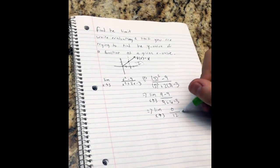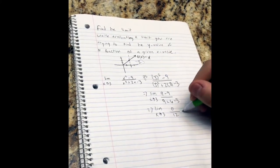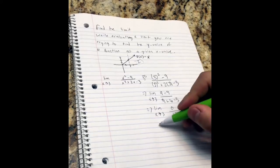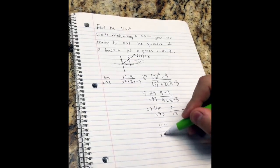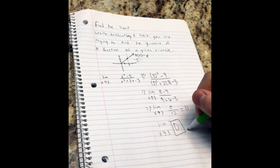And as we know, any number that is 0 over another number would equal 0. So the limit as x approaches 3 would be 0. Complete.